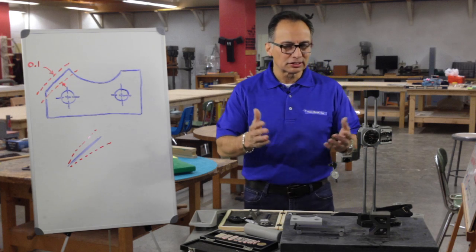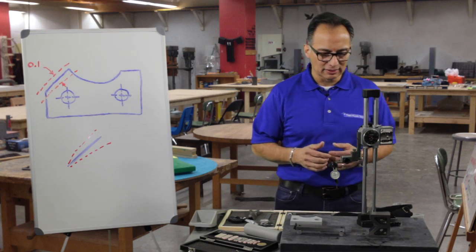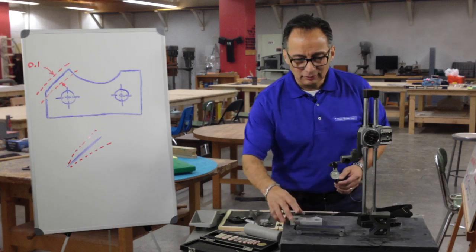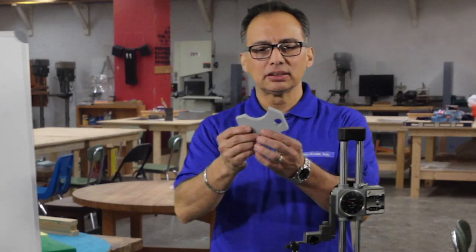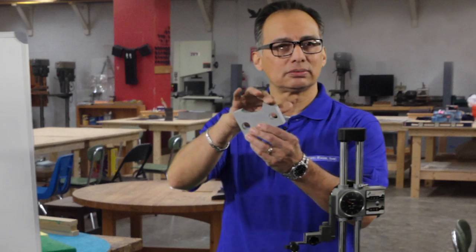So let's set up an angularity and understand how to inspect this. I have my height gauge here. I have the part that I have drawn up there, and you can see I have the angled surface.